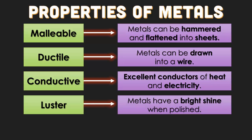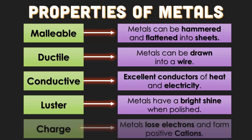Metals also have what we call a luster — luster is just a bright shine when a metal is being polished. And they have a charge: metals will always lose electrons and they will always form positive cations. Always lose electrons and form positive cations. Gotta know it.